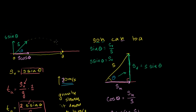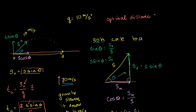Going back to the original problem: if s is 10 meters per second, and gravity is 10 meters per second squared, then your optimal distance is s squared — that's 100 — divided by gravity, which is 10. The units work out: meters squared per second squared divided by meters per second squared, the second squares cancel and you have meters squared over meters, leaving you with meters. Your optimal distance would be 10 meters.